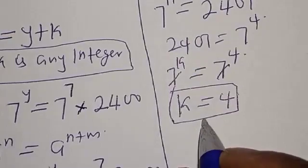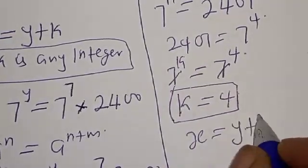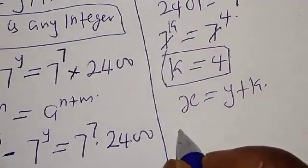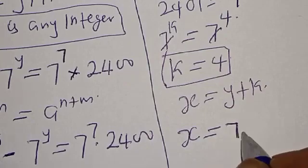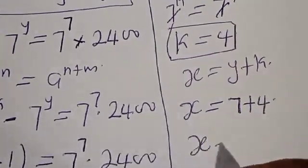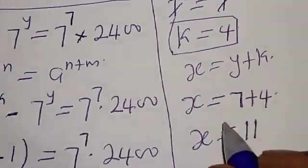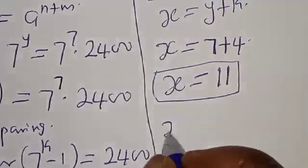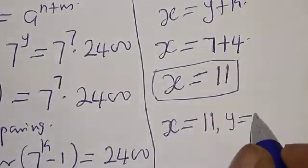Remember that we said x is equal to y plus k. Our k is equal to 4 and our y is equal to 7. Therefore x is equal to 7 plus 4, which equals 11. So our final answer is x equal to 11 and y equal to 7.